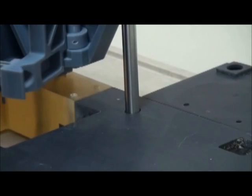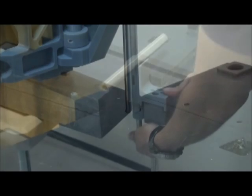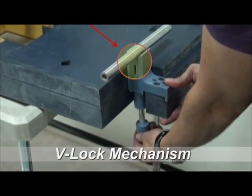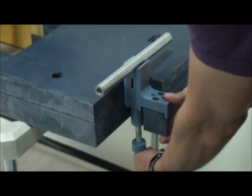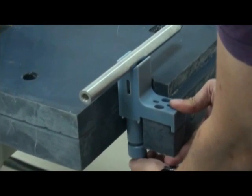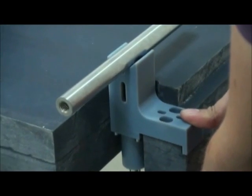We printed all the parts involved in the bearing attraction mechanism before we had even completed the jig design. The parts were printed using OBJET's VeroBlue material. This enabled us to perform a fully functional test for the attraction mechanism the day following the model's completion.